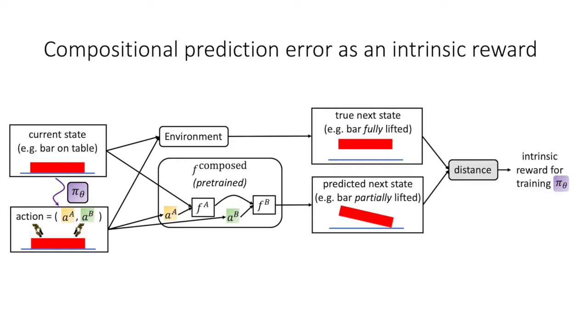We train the policy to prefer actions such as these, where there is a large prediction error by the composition of single-agent predictors, as a way to bias towards synergistic behavior.